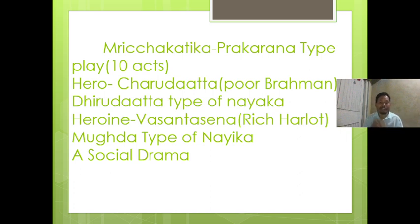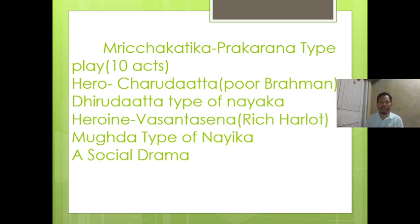Mricchakatika is another type of Sanskrit play prescribed in the syllabus, and it is a Prakarana type of play. The Prakarana type must consist of 10 acts. Here the hero is Charudatta, who is a poor Brahman, and he is a dhira-udatta type of nayaka. Mricchakatika is a social drama, and the meaning of its title — 'the little clay cart' — is also very important for examination purposes.